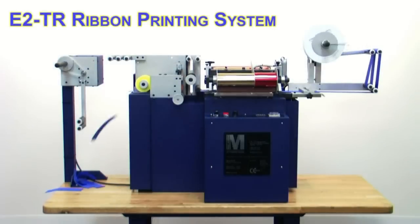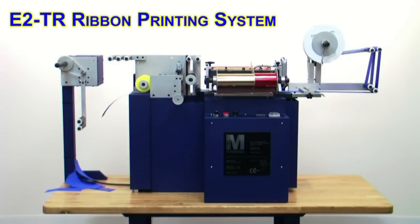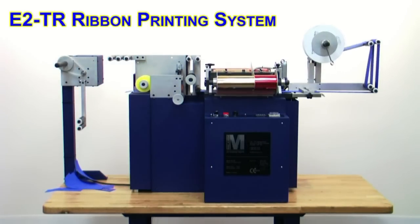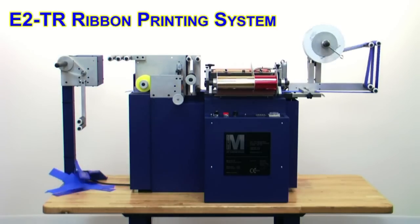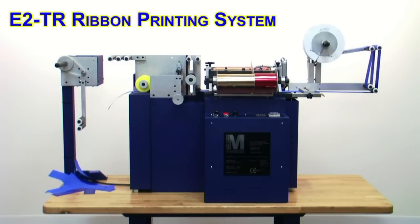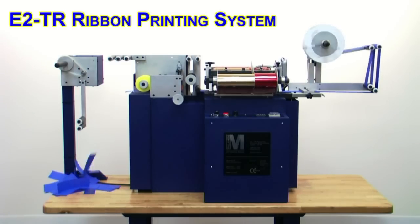Equally at home in both owner-operated ribbon shops and the world's largest ribbon mills, every day E2s hot stamp hundreds of miles of ribbon in factories from New Jersey to New Zealand. Quiet, productive and reliable, the E2 is the world's best-selling industrial ribbon press for good reason.